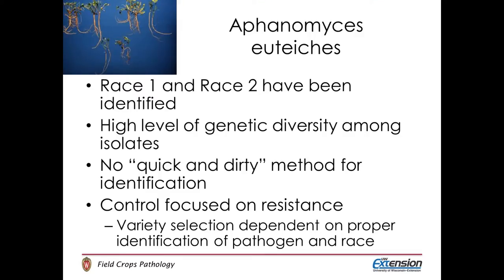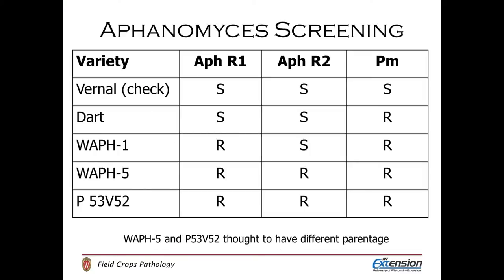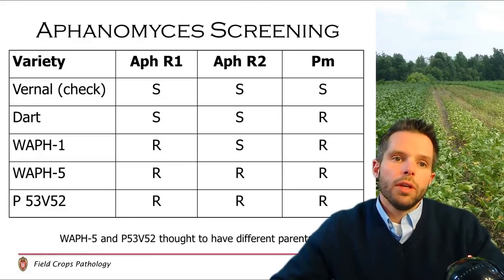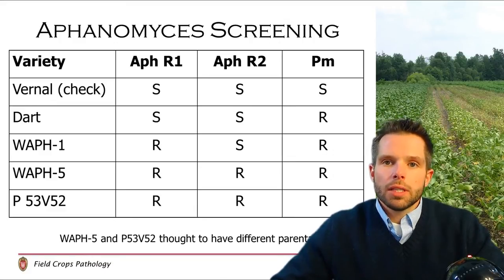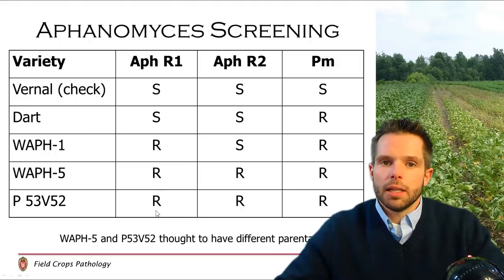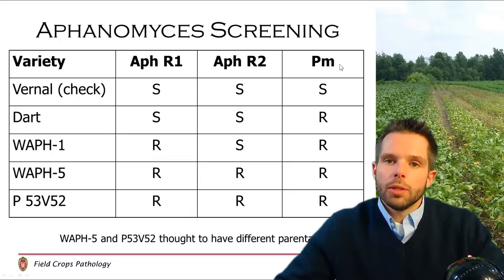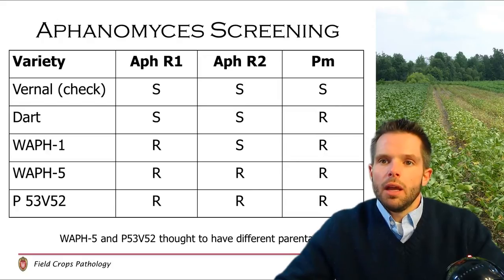Control is mainly focused on utilizing resistant varieties, so knowing the race that you're dealing with can help you choose that variety — and that's one of the advantages to sending a sample into the diagnostic lab. In our diagnostic lab we use a differential set of varieties, and you can see the different resistance and susceptible makeup of the various varieties used in the screening. This screening allows us to not only identify whether Aphanomyces is present, but it can also tell us which race is present in that particular soil sample so that we can make tailored recommendations. We also include a variety that is susceptible to Phytophthora, which can be a difficult disease to differentiate from Aphanomyces, so we can differentiate that as well.